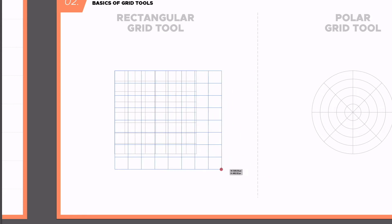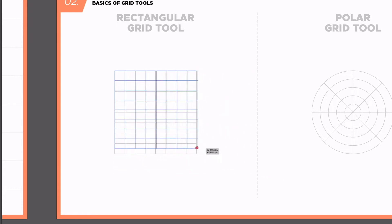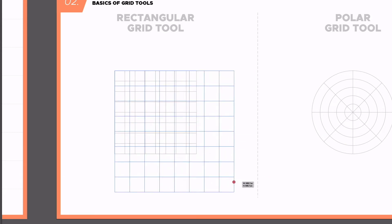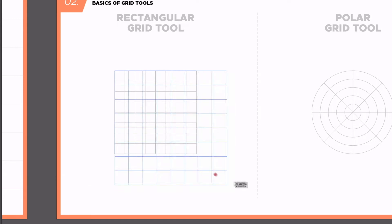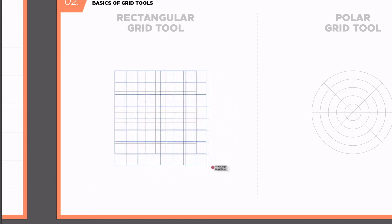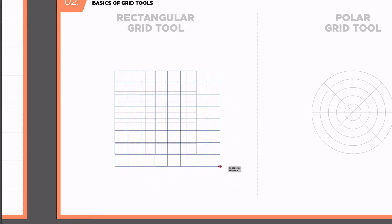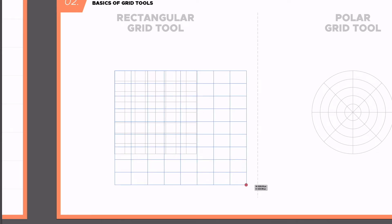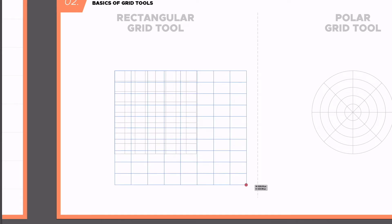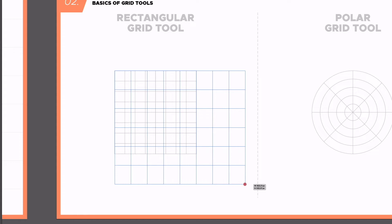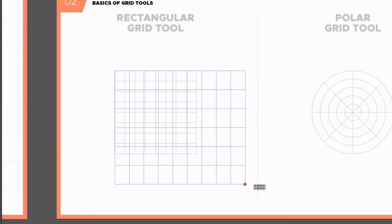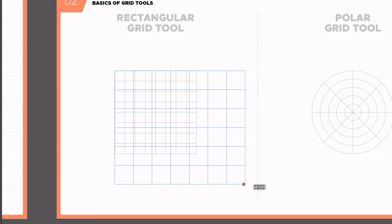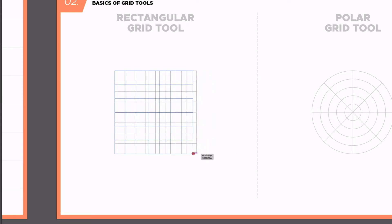Similar to the rectangle tool, if I hold Shift this will lock it to a perfect square, so we're naturally getting a perfect grid. I can also use my arrow keys on the keyboard — tapping the up and down arrows adds more rows, and using the left and right arrows adds or removes columns. We can quickly and easily create grids this way.